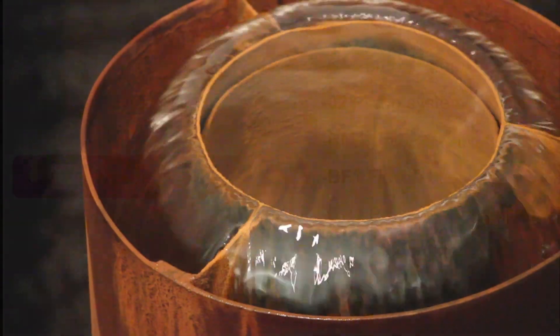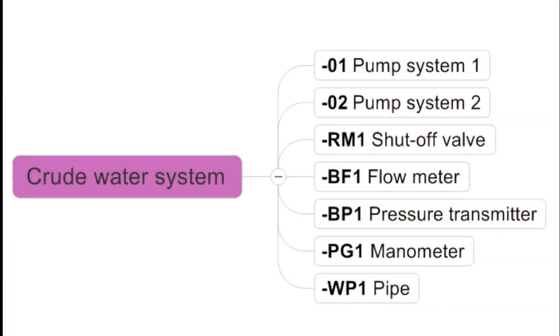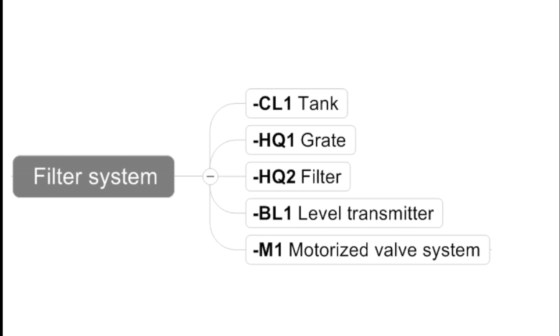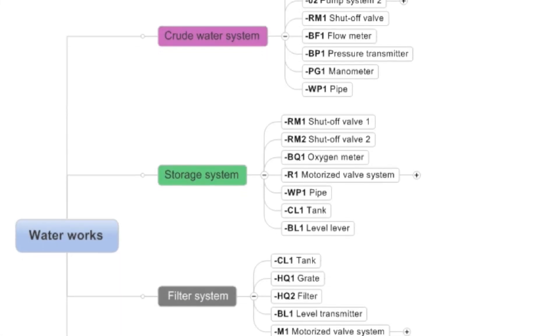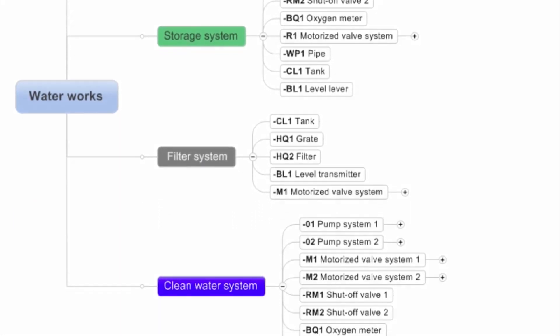Here is another example. A waterworks is composed of eight main systems — for example, the crude water system, the storage system, the filter system, and the clean water system. If you display this in a diagram, it will look like this. As you can see, everything is about systems. I haven't encountered any technical design yet which cannot be regarded as a system. As part of our company concept, we always create a system architecture for our clients in the background as a navigator.